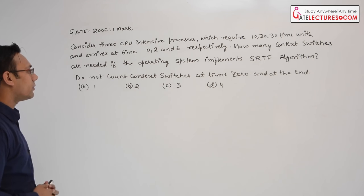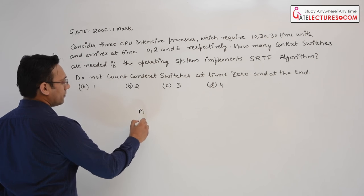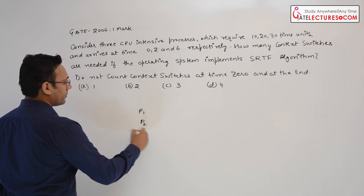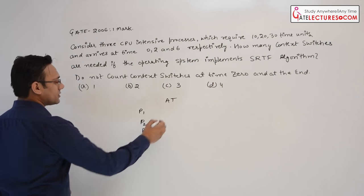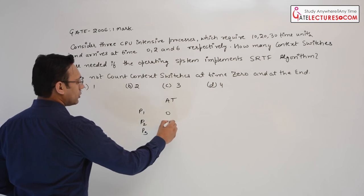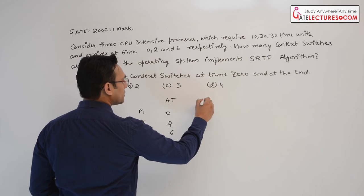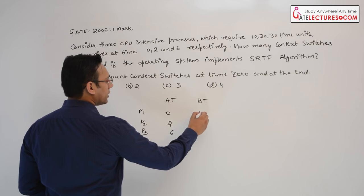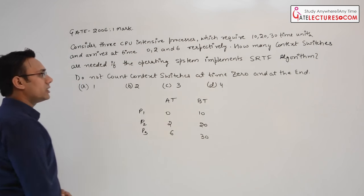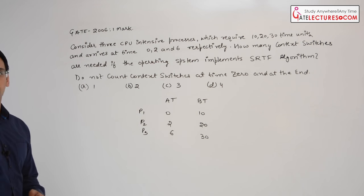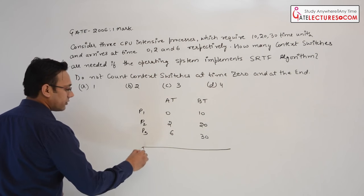Let me formalize the problem. We have three processes P1, P2, and P3. Their arrival times are 0, 2, and 6, and their burst times are 10, 20, and 30 respectively. The question asks for the number of context switches. Let us make a Gantt chart for this.